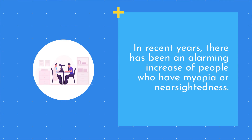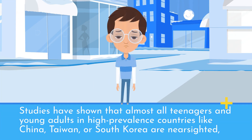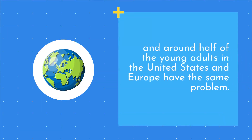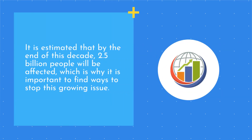In recent years, there has been an alarming increase of people who have myopia or nearsightedness. Studies have shown that almost all teenagers and young adults in high-prevalence countries like China, Taiwan, or South Korea are nearsighted. And around half of the young adults in the United States and Europe have the same problem. It is estimated that by the end of this decade, 2.5 billion people will be affected, which is why it is important to find ways to stop this growing issue.